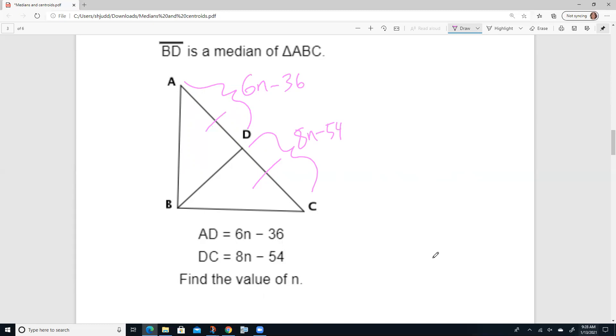Do we have to double one of these? No, because they're both just two halves of the same line. Half is equal to the other. So 6n minus 36 is equal to 8n minus 54.